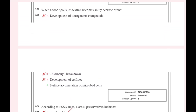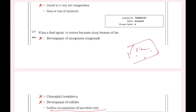When a food spoils, its texture becomes slimy because of the structure. The surface becomes slimy due to surface accumulation of microbial cells.